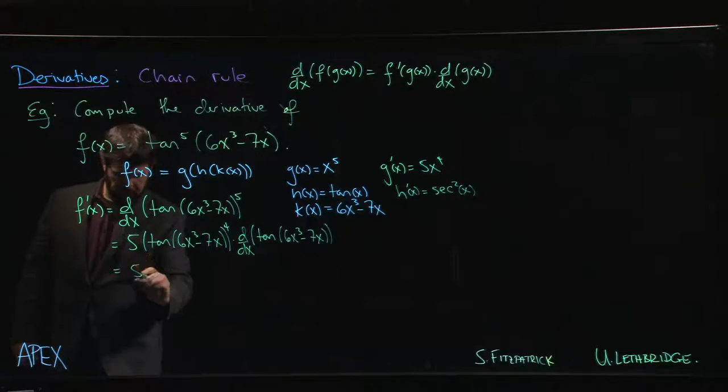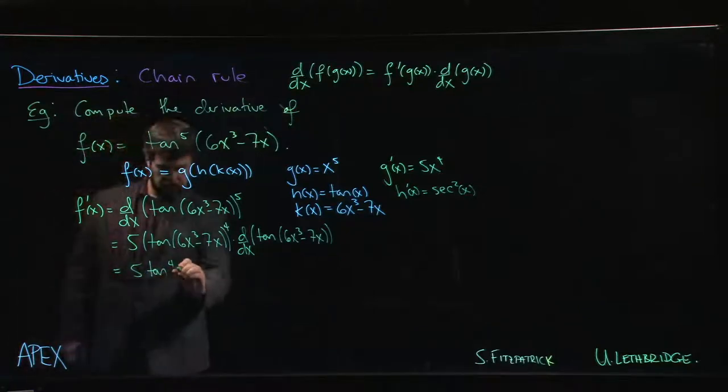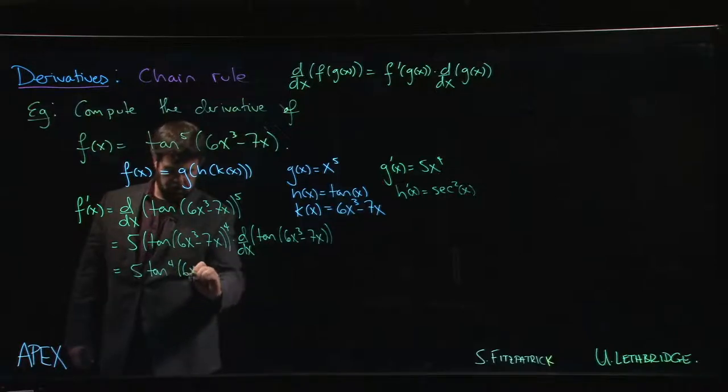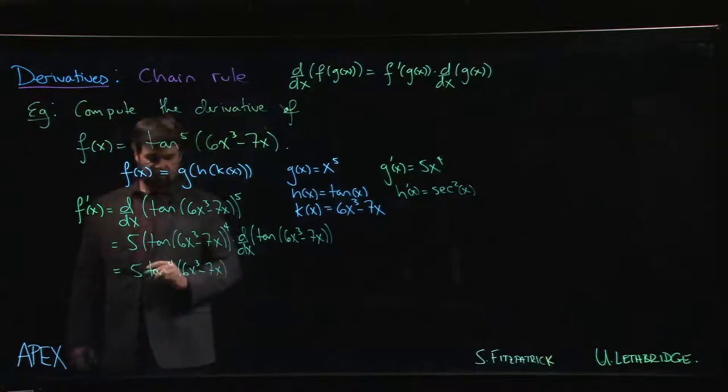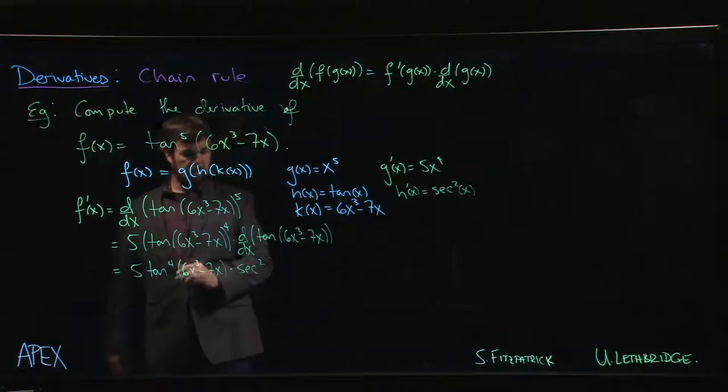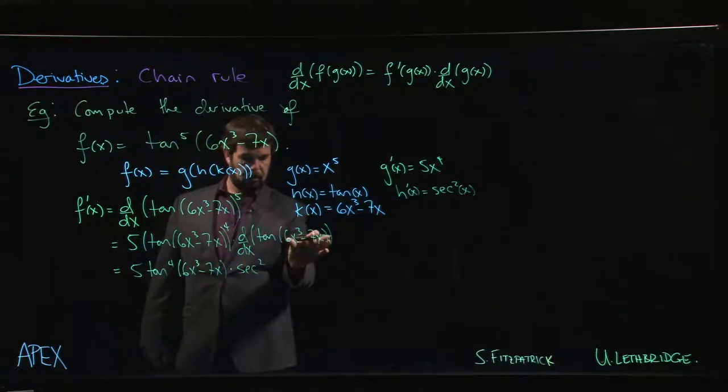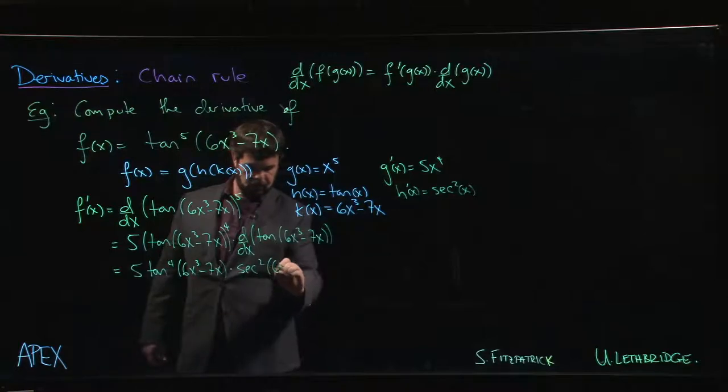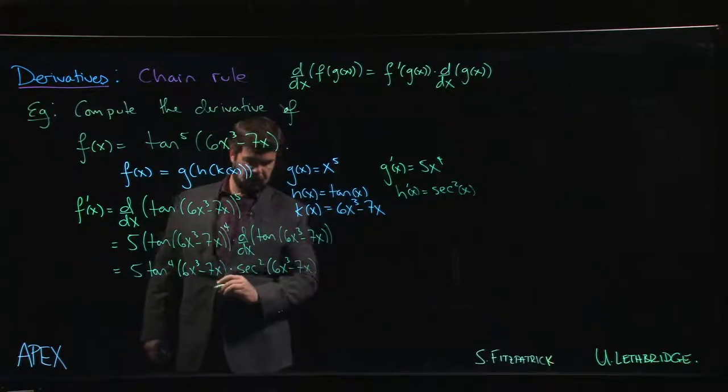So next up, we have 5, and we'll move the power back onto the tan—5 tan to the 4 of 6x cubed minus 7x. So now we do the derivative of tan, which is secant squared, and we have to evaluate that at whatever was inside the tan function to begin with, 6x cubed minus 7x.